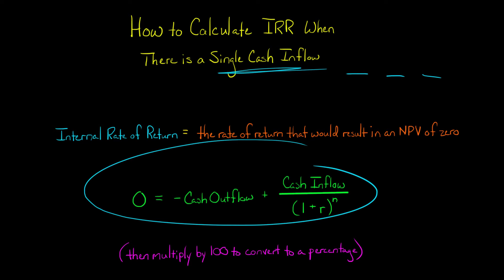So you're going to set this up like this, and I'm going to show you an example in a minute. You're going to solve for the R right here, and that's your internal rate of return. And then you're going to multiply that number by 100 to convert it to a percentage.